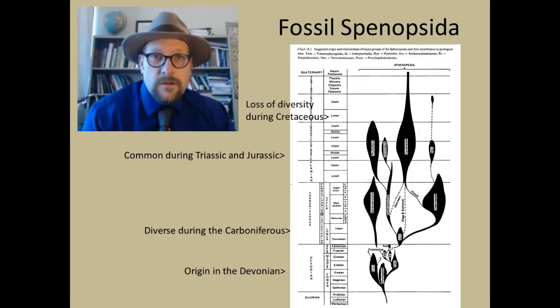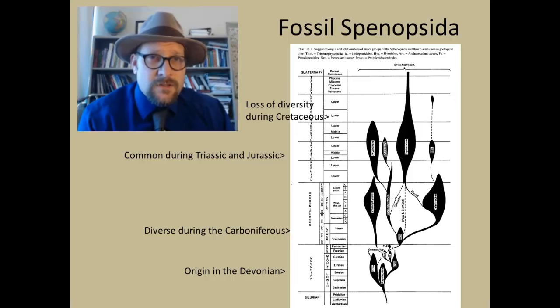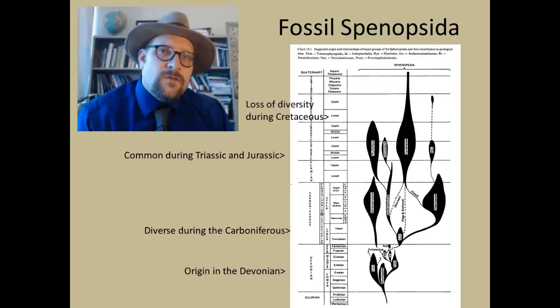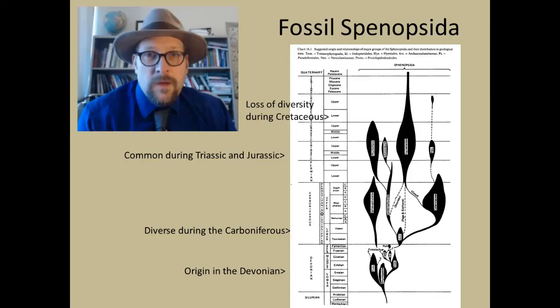During the Triassic and Jurassic, the horsetails were widespread, but as for the Cretaceous, the horsetails started losing out in diversity. This drop in diversity of the Sphenopsids during the Cretaceous might reflect the competition with modern angiosperms, the origin of today's grasses, which could grow in dry environments and may have outcompeted the grass-like horsetails.